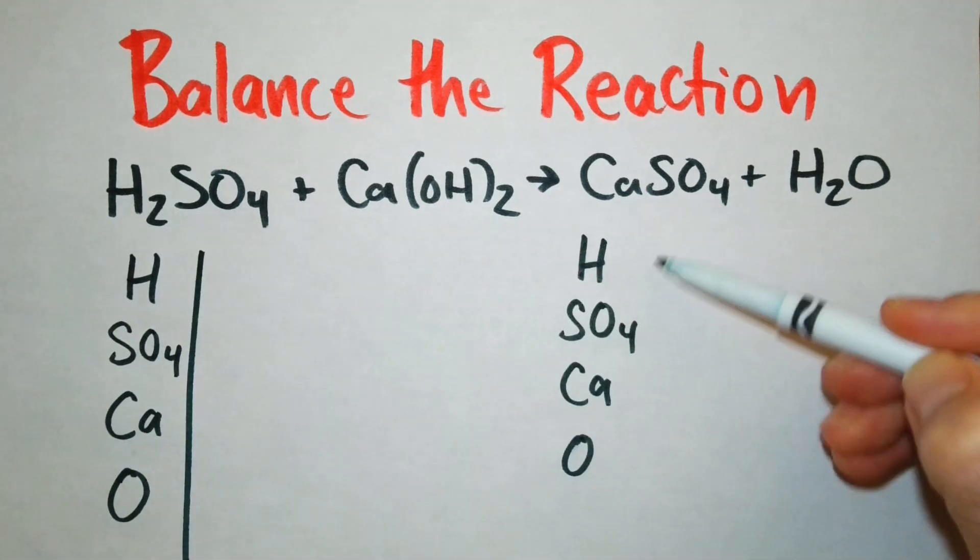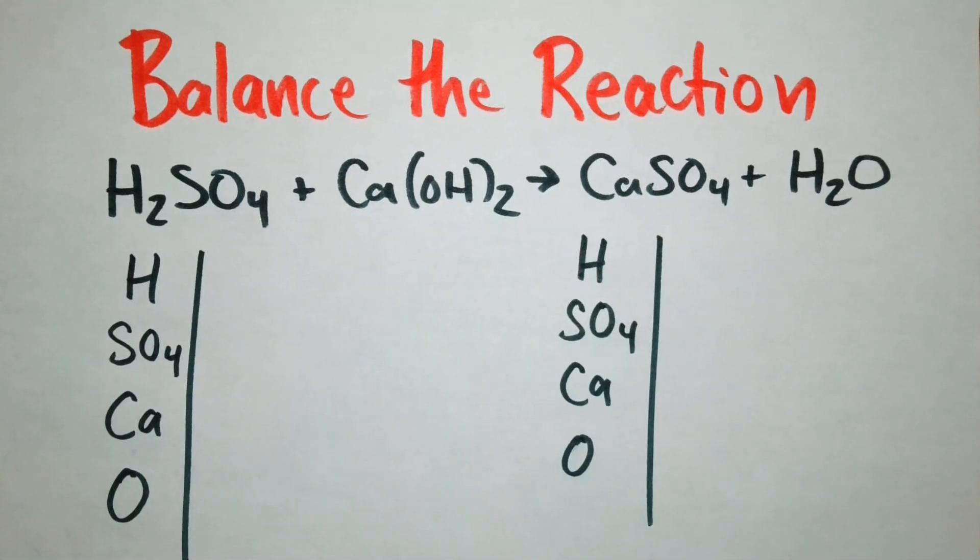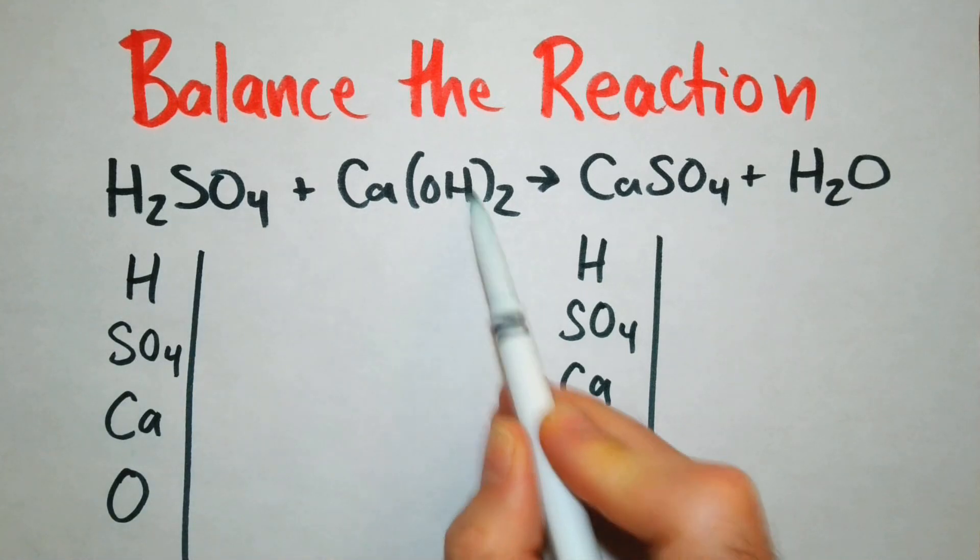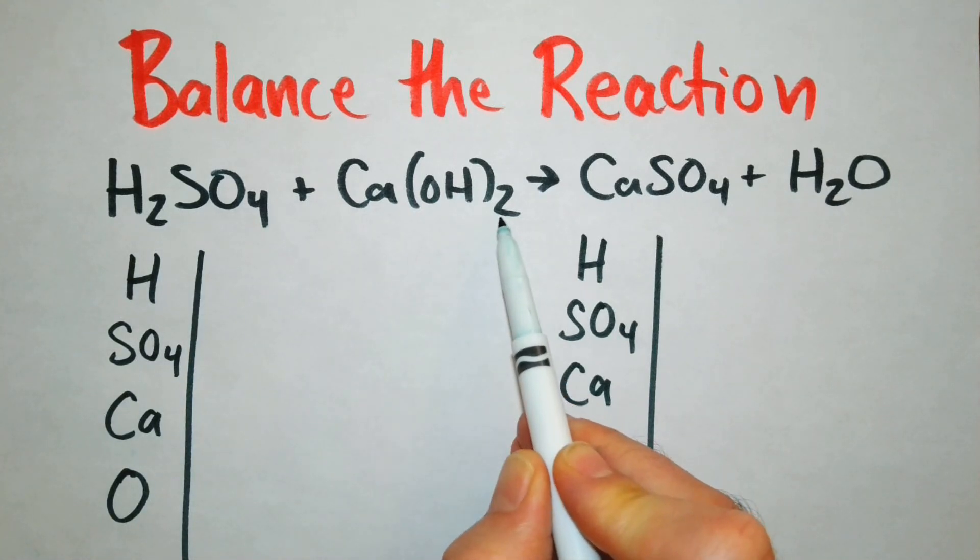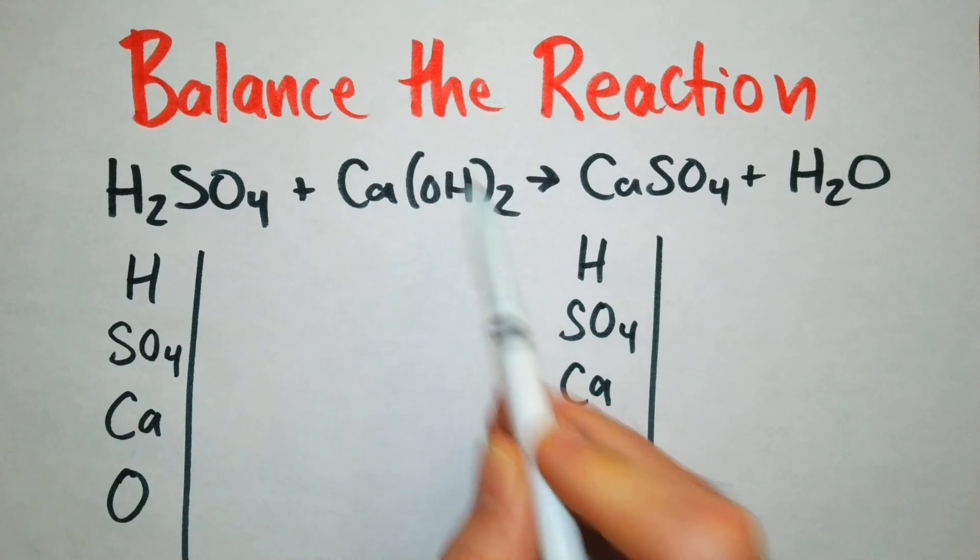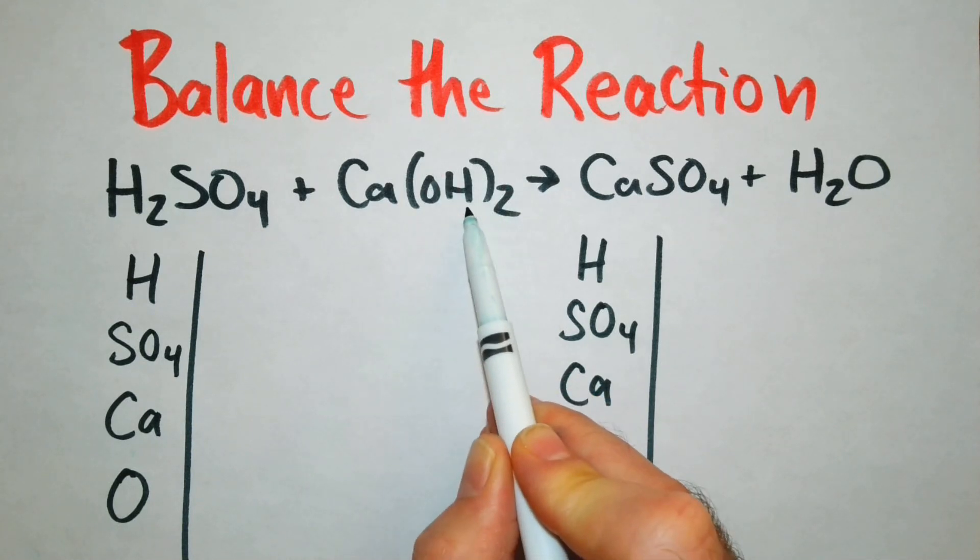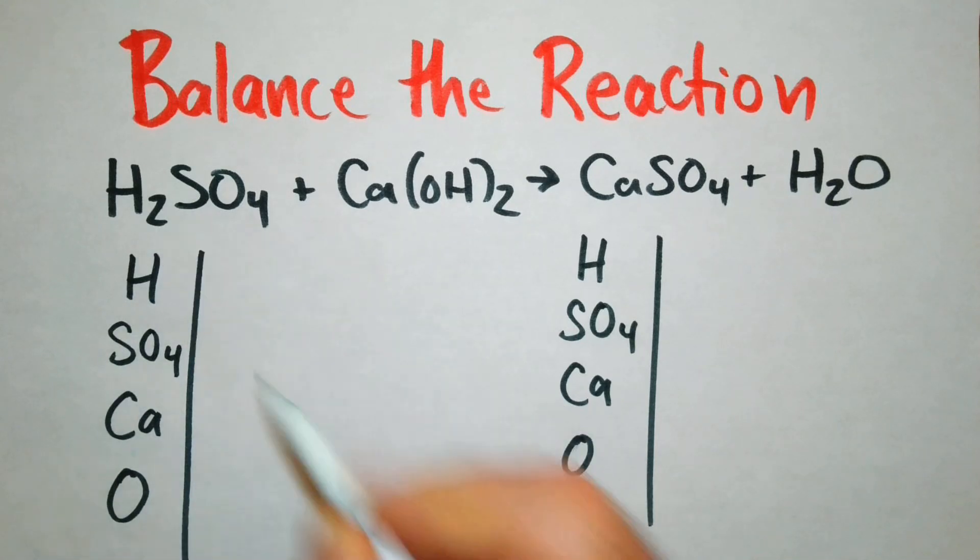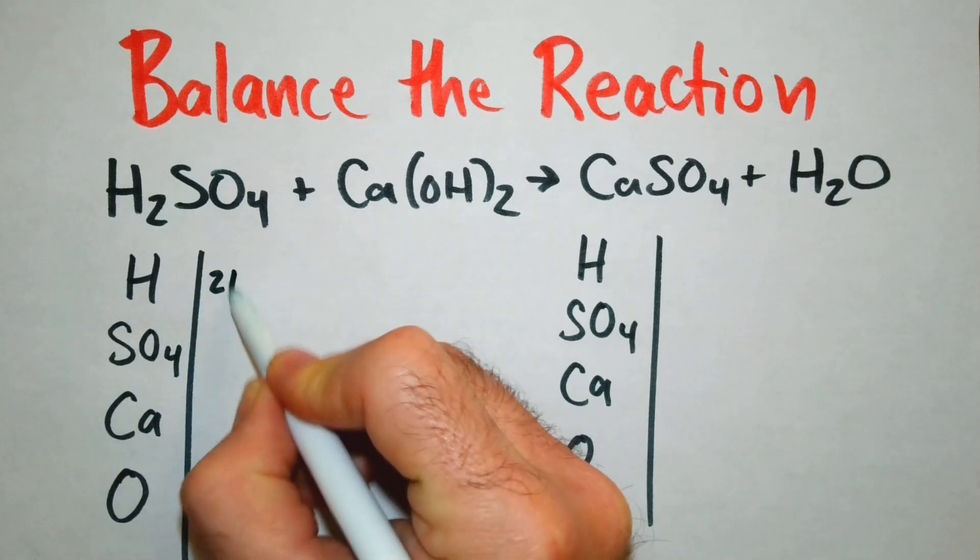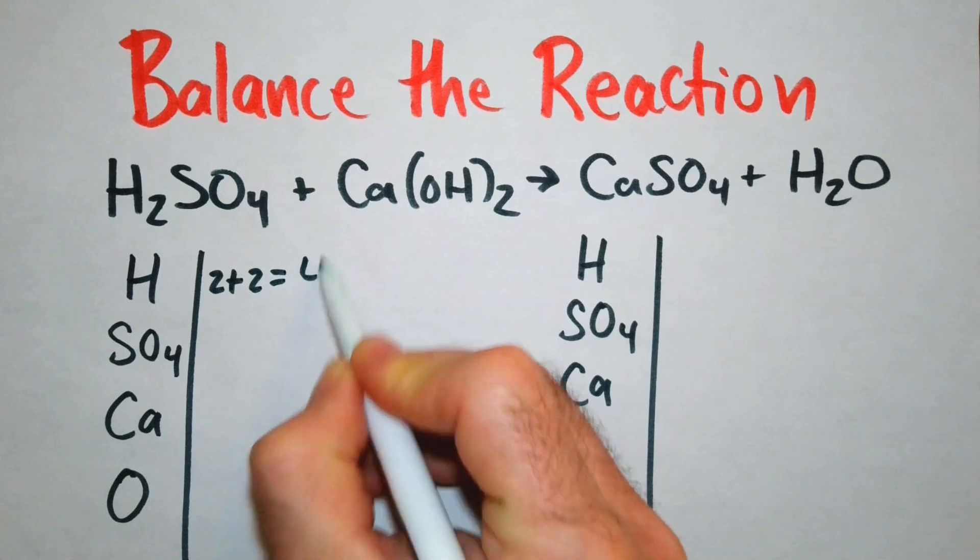So at this point we're just going to count the number of atoms of each element. So for hydrogen we have two here plus we have more hydrogens here. So the subscript of two outside the parentheses said we have to apply that to everything inside. So that means we have two hydrogens here we have another two hydrogens there. So two plus two gives us four.